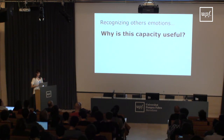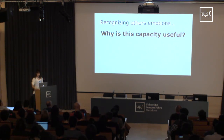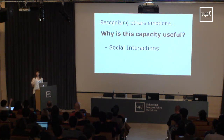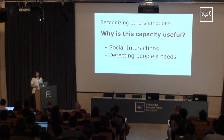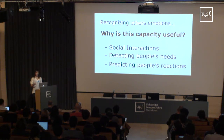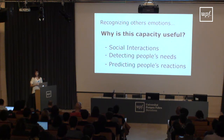We have this capacity of recognizing others' emotions very easily, and this capacity is very useful for many things. In particular, it's very important for our social interactions — we use it to understand how others feel and to address other people properly. We also use this capacity for detecting other people's needs or for predicting how they are going to react.